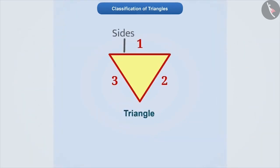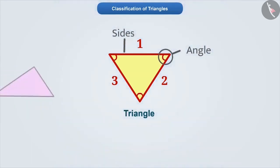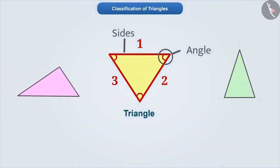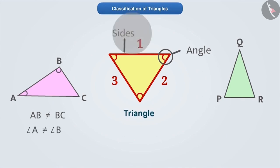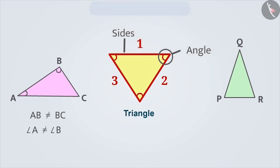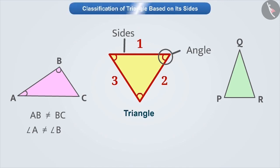Along with three sides, a triangle also has three angles. In different triangles, we see that the measures of sides and angles are different. To understand triangles better, we classify them on the basis of their sides and angles. So, let's first learn the classification of triangles based on the sides.